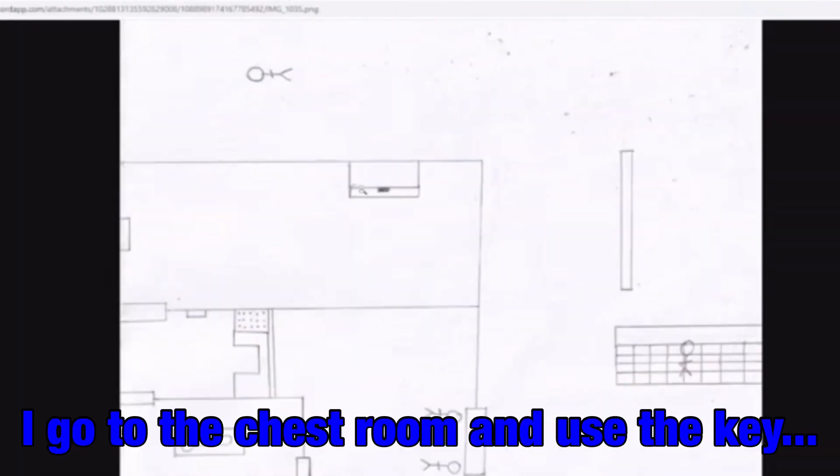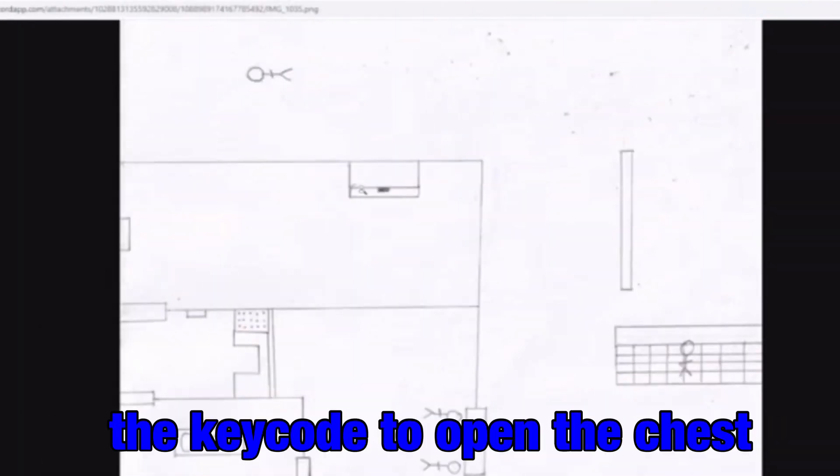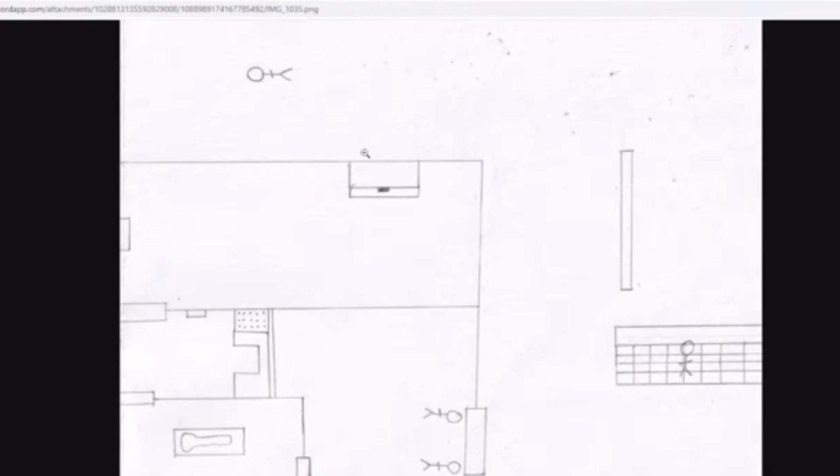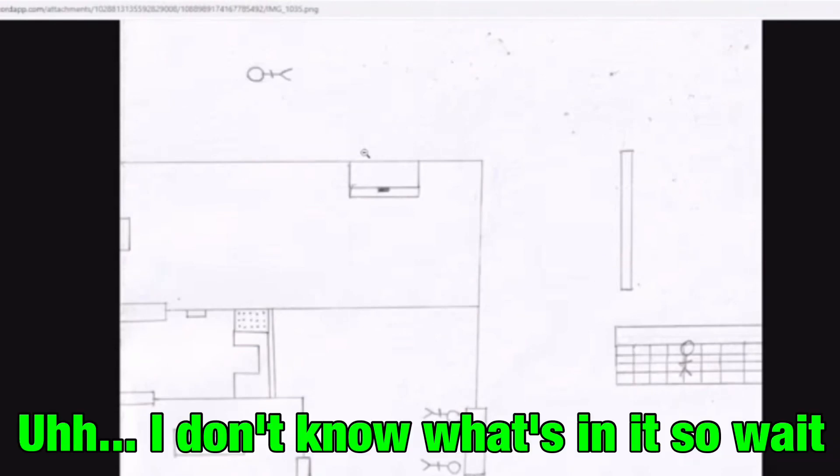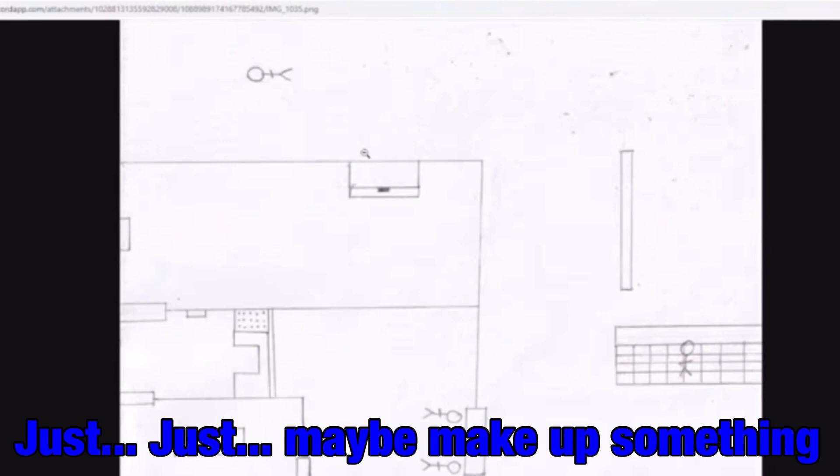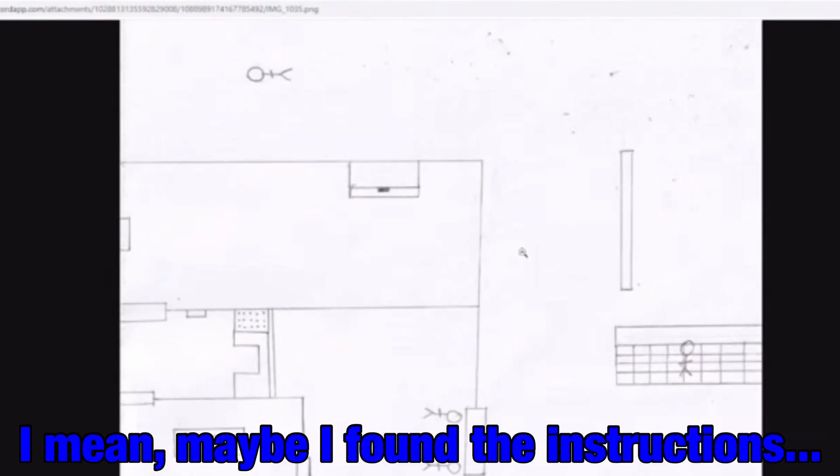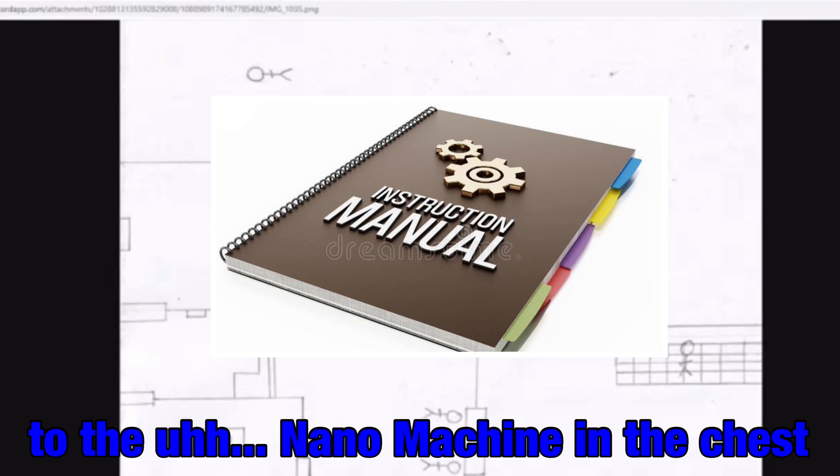Let's go. All right, I go to the chest room and use the key code to open the chest. There better be something good in it. Just maybe make up something. I mean, maybe I found the instructions to the nano machine in the chest.